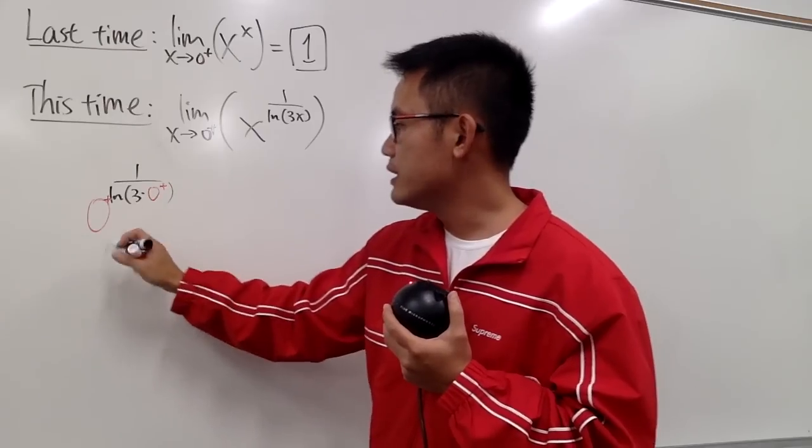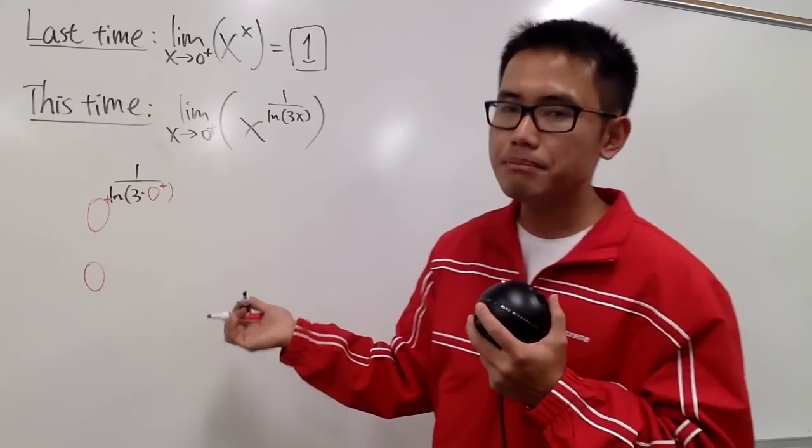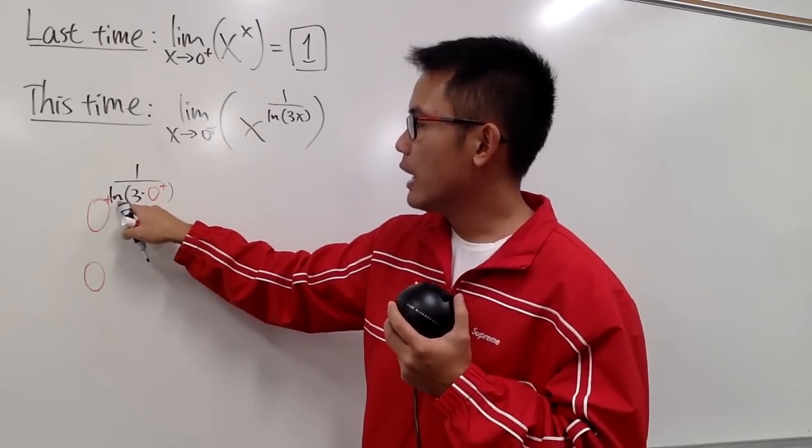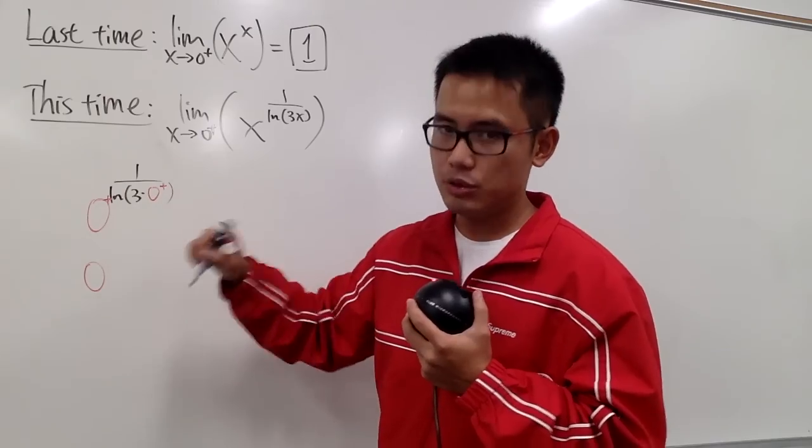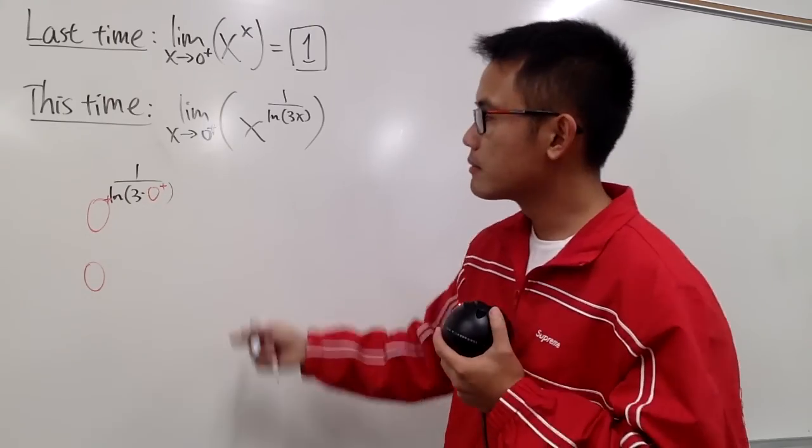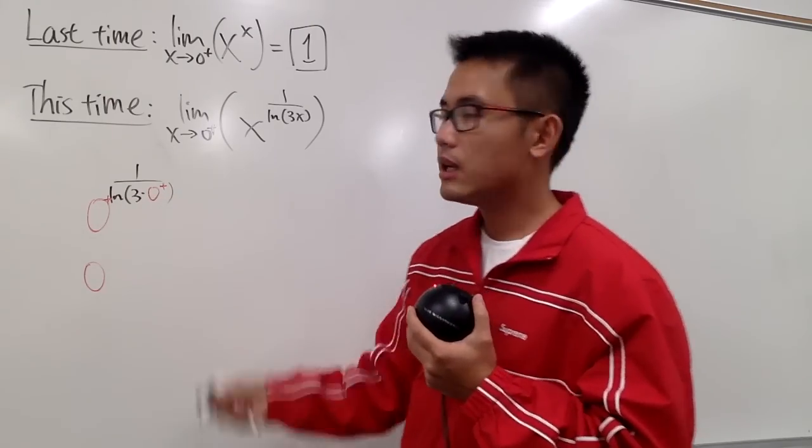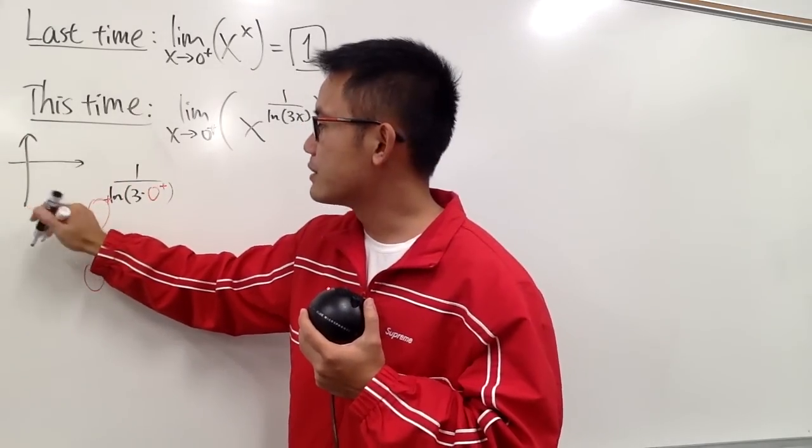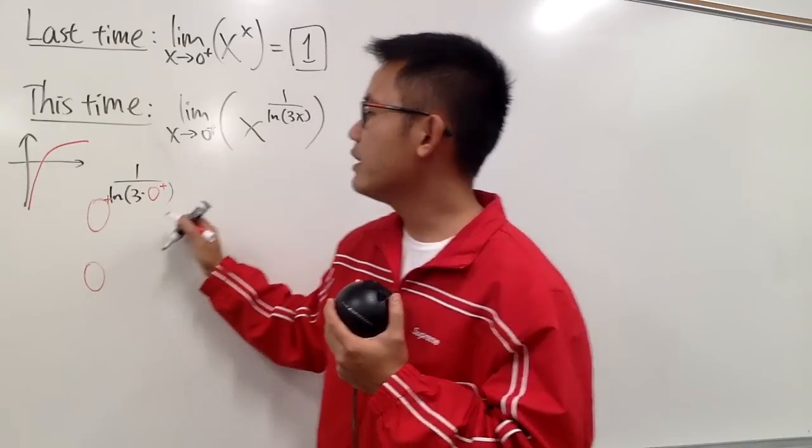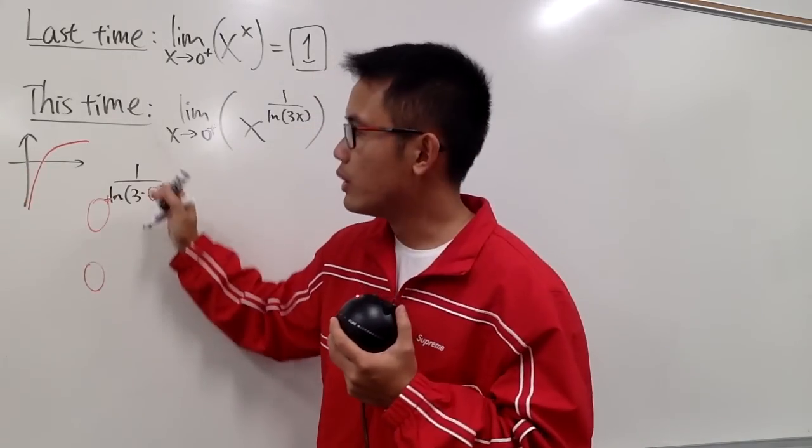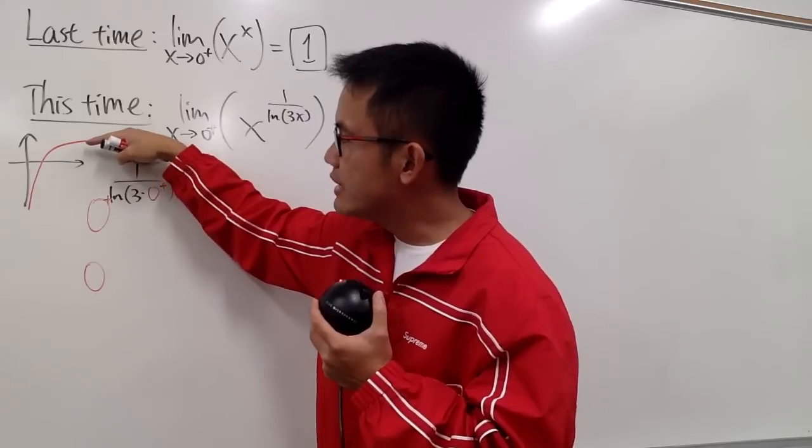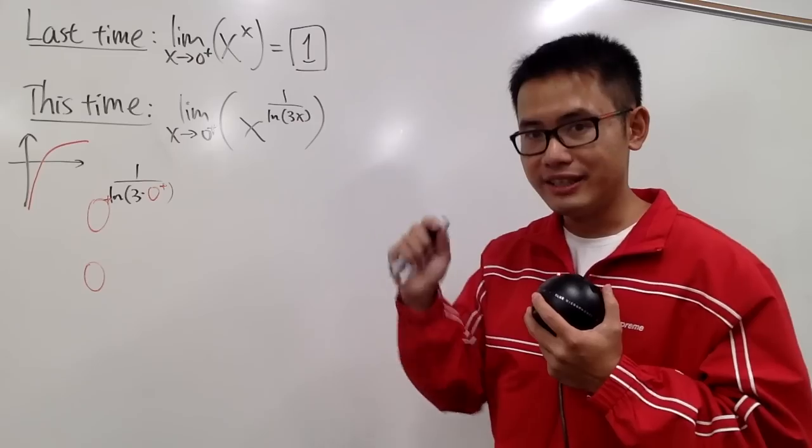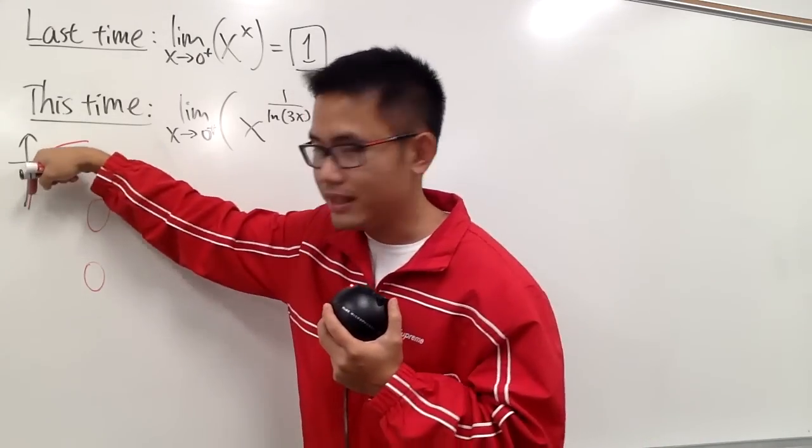So now we see that the base is 0, no problem with that. But here, the denominator of the power, ln of 3 times 0 plus, this is still 0 plus, no problem with that. But what's ln of 0 plus? Let's take a look at the graph real quick. ln x looks like this, and when x is approaching 0 from the right-hand side, you see that the graph goes straight down. That means ln of 0 plus is negative infinity. It goes straight down.